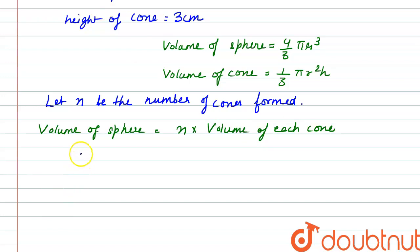The volume of sphere is 4 by 3 pi r cube is equal to n times volume of cone is 1 by 3 pi r square h.